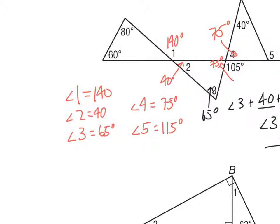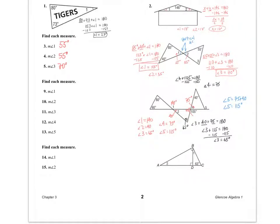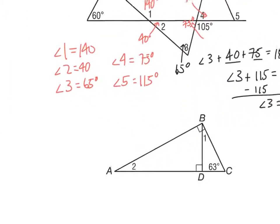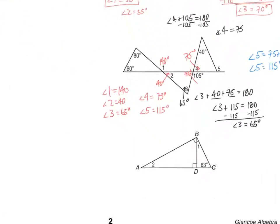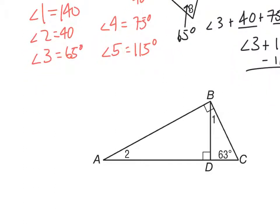Pretty simple — I'm just using the picture. Let's take a look at numbers 14 and 15, the last few. I know we're kind of out of order on those numbers, but let's find angles 1 and 2 here.